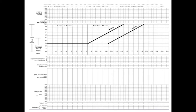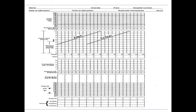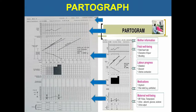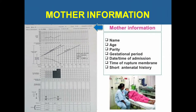The partograph consists of five components: first is mother information, second is fetal well-being, third is labor progress, fourth is medications, and fifth is maternal well-being. Mother information includes name, age, parity, gestational age, date and time of admission, time of rupture of membrane, and a short antenatal history.